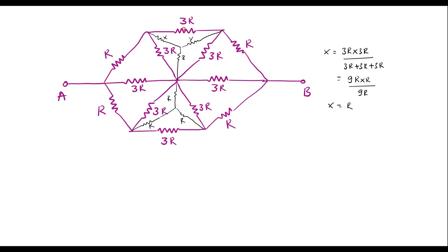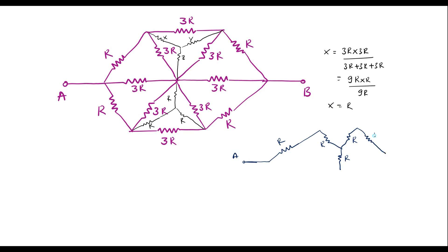Let me draw the equivalent circuit by removing these delta fashion resistors. We have terminal A here. Let me draw this R. This is R, and here we have X, Y, Z. This is X, this is Y, and this is Z. The values of X, Y, Z are R, R, and R, and here we have one more R. From this point to this point there is 3R, and here from this point to this point, there is also 3R.